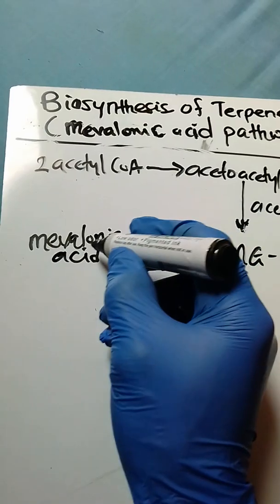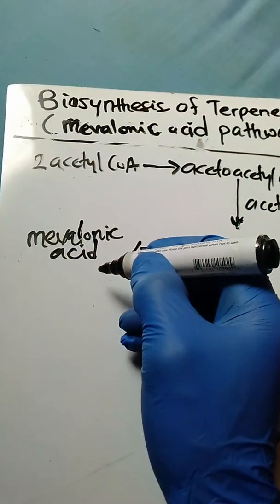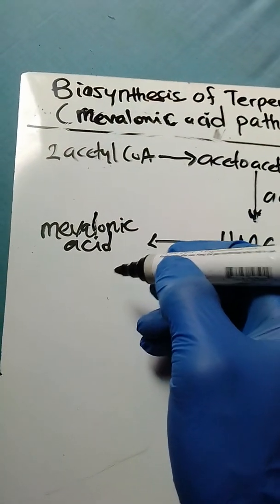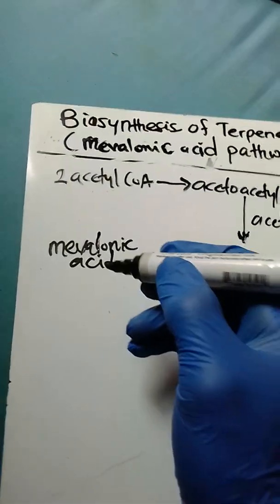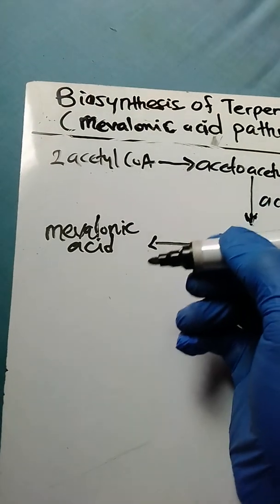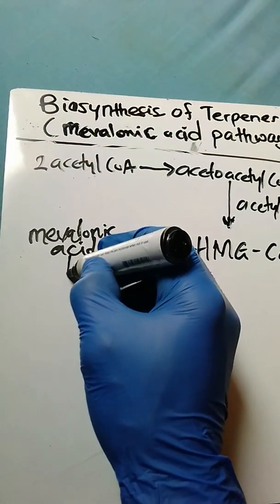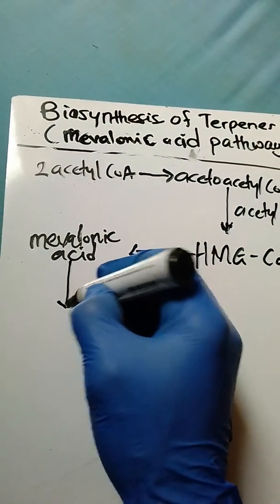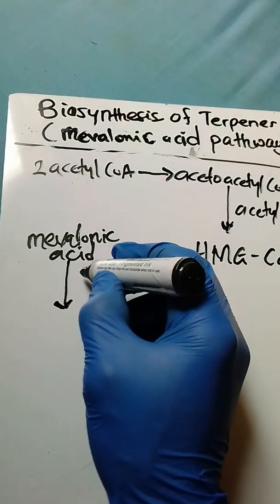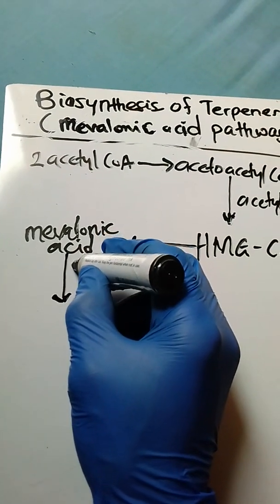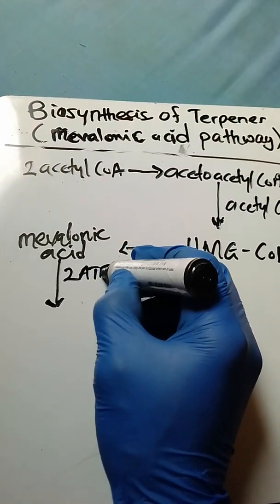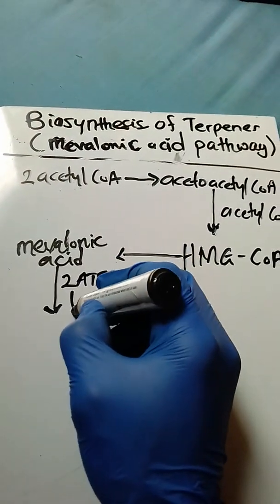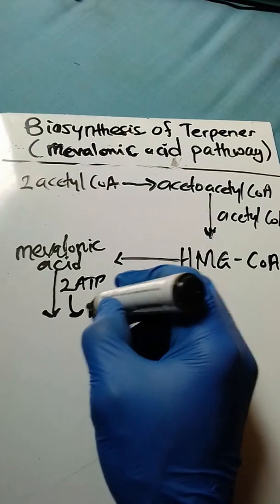The mevalonic acid produced undergoes pyrophosphorylation, that is, it gets phosphorylated two times. In each of these, phosphate groups come from ATP. So in this step, two ATP are going to be utilized to yield two ADP.